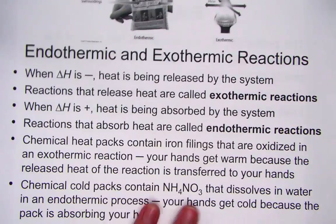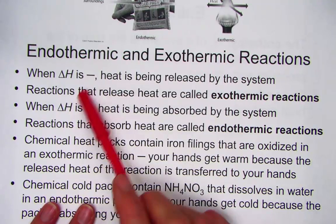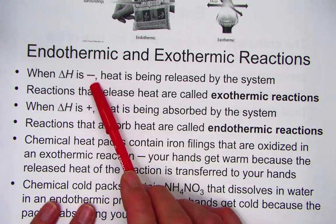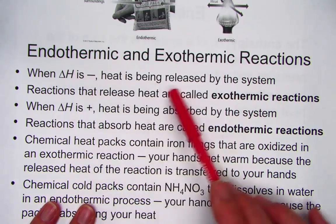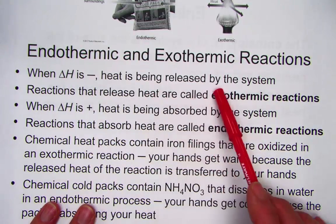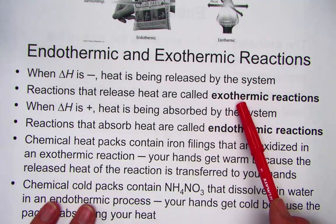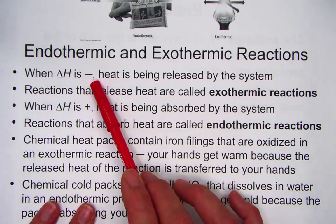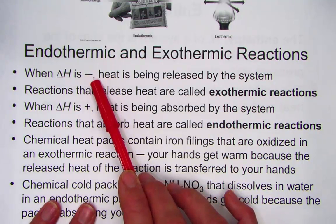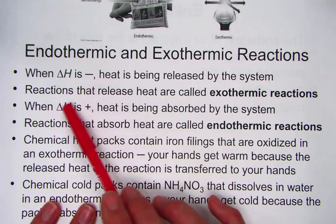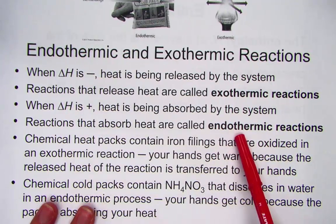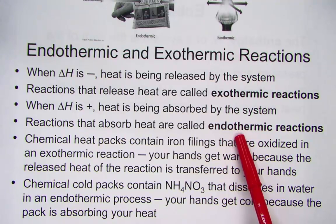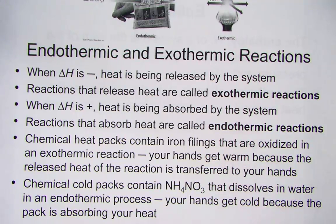Endo- and exothermic reactions are denoted with a negative sign for exothermic when the change in enthalpy shows heat being released by the system — that's termed exothermic and gets a negative sign. Heat is being lost by the system to the surroundings. Reactions where delta H is positive show an endothermic reaction; the system is gaining heat energy from the surroundings.